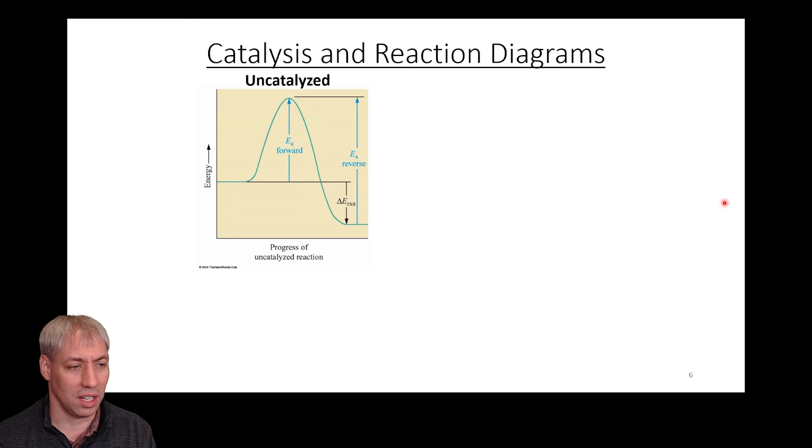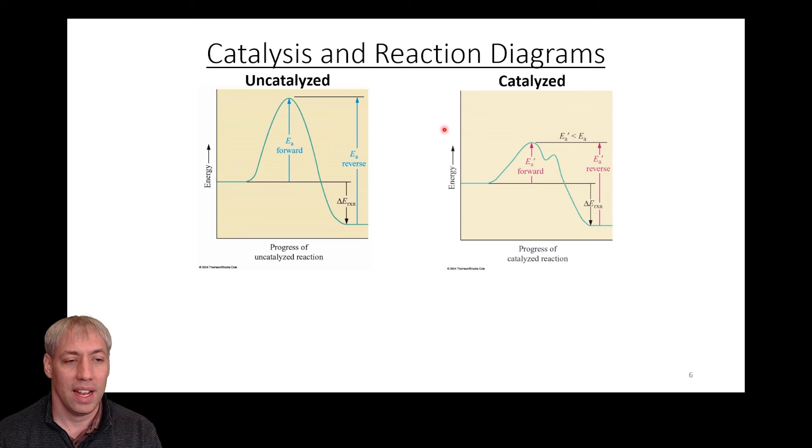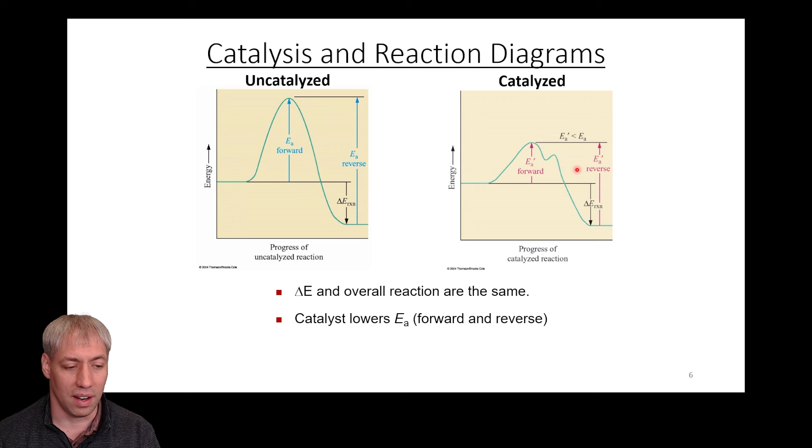Here's our reaction coordinate diagram. We have our reactants, we have our products, we have our delta E for the reaction. We have an activation barrier for forward and an activation barrier for the reverse process. We presumably have a transition state as well. That's an uncatalyzed reaction. If we add a catalyst to this and it speeds up the reaction, it's going to speed up the reaction by changing the path from A to B. Reactants and products stay the same in both of these cases, but we're effectively changing the path it has to take to get there. The delta E overall reaction is the same. What's changing is the path between them.